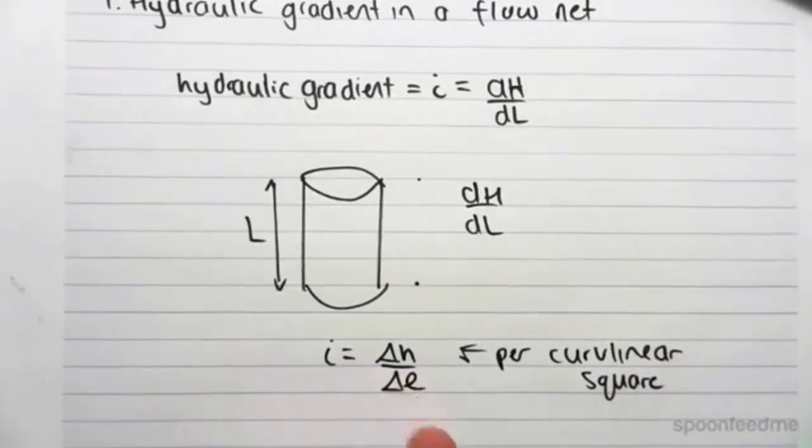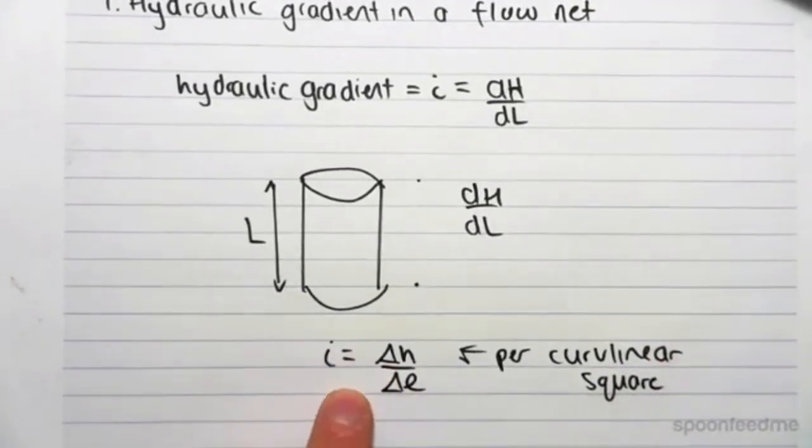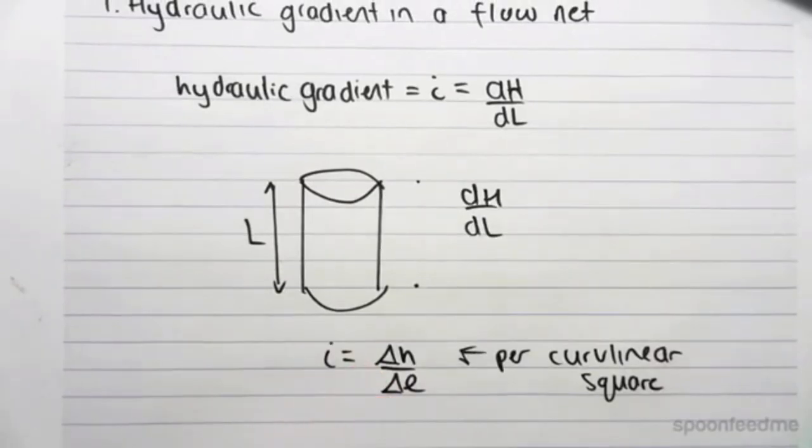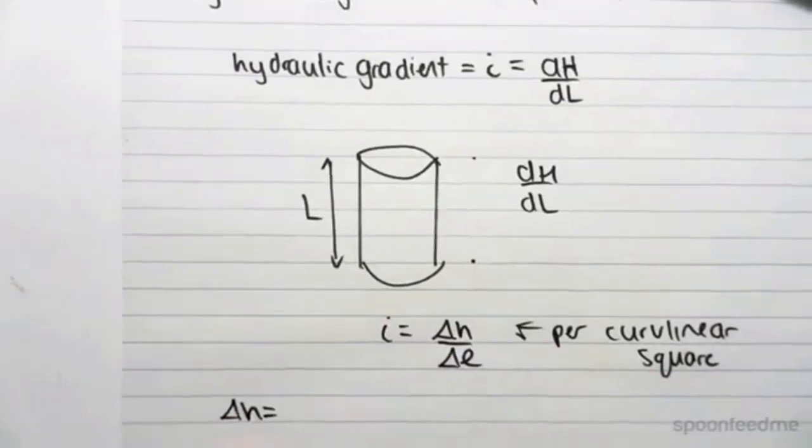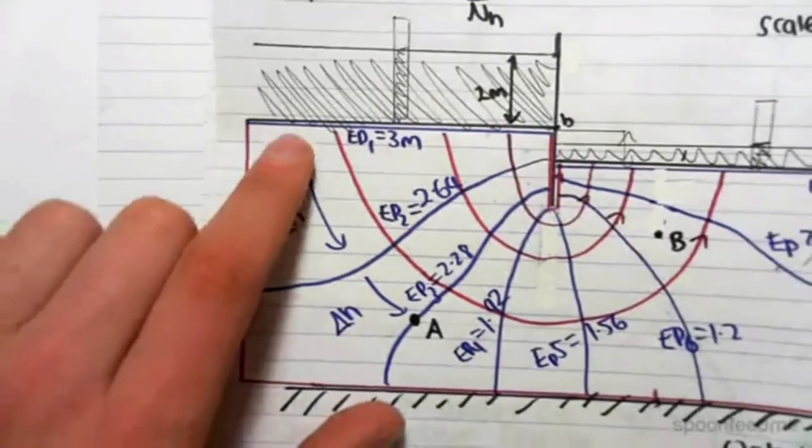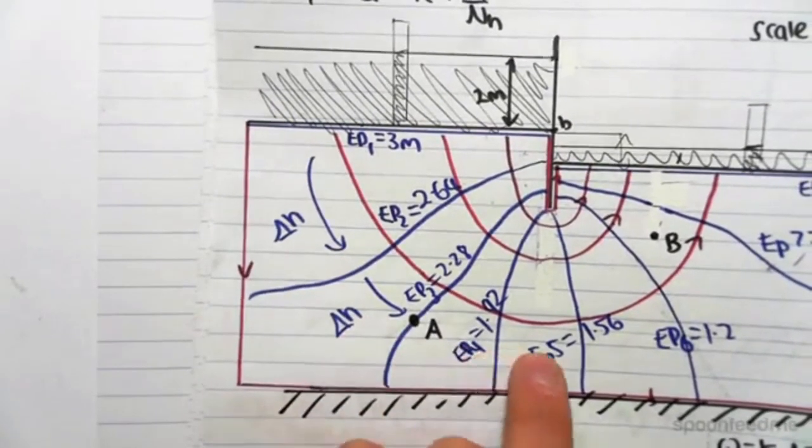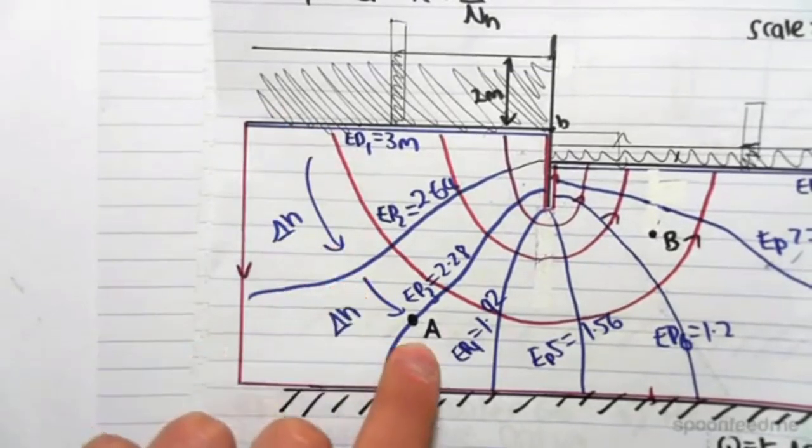So it's per square. The hydraulic gradient is going to change at every single square, because you're going to be getting different changes in length. The first thing we can find is change in h, which is easy. We've found that before. That's just the head drop from EP to EP.